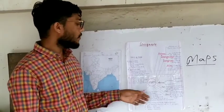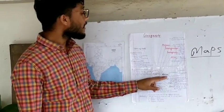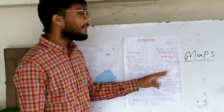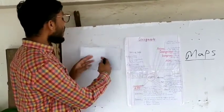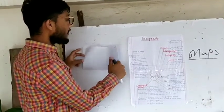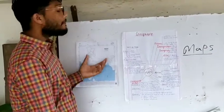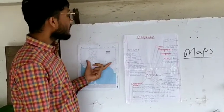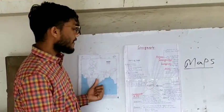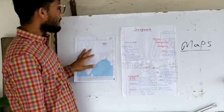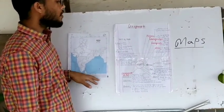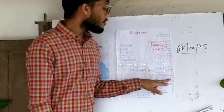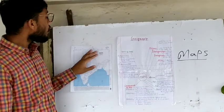Good morning students, today I teach you about maps. Map is derived from the Latin word 'mapa' meaning napkin. We can easily fold the map of India — see, this is the map of India, we can easily fold it. Map is the representation of Earth on a flat surface, a 2D drawing of Earth. It provides more information than a globe.